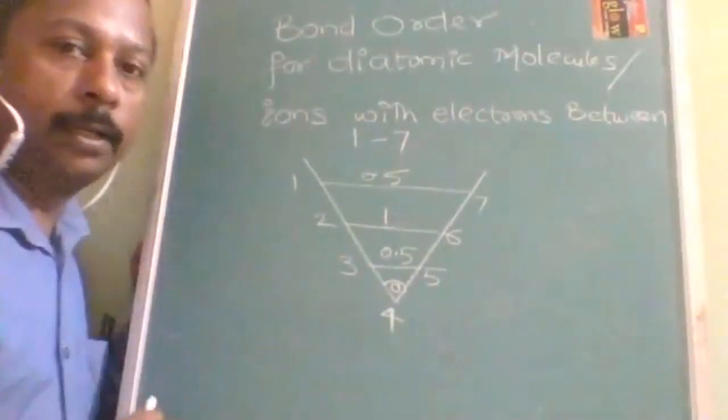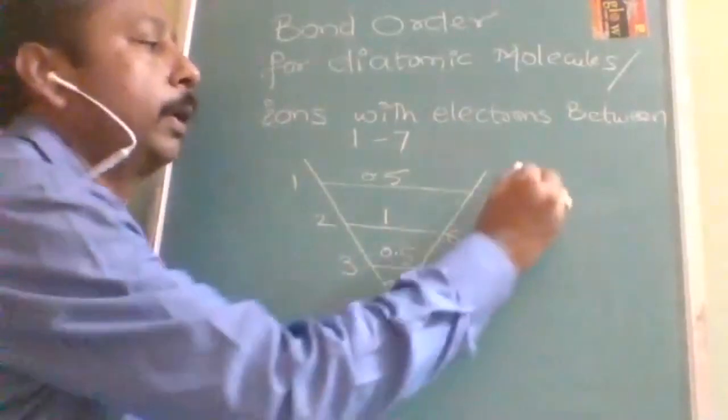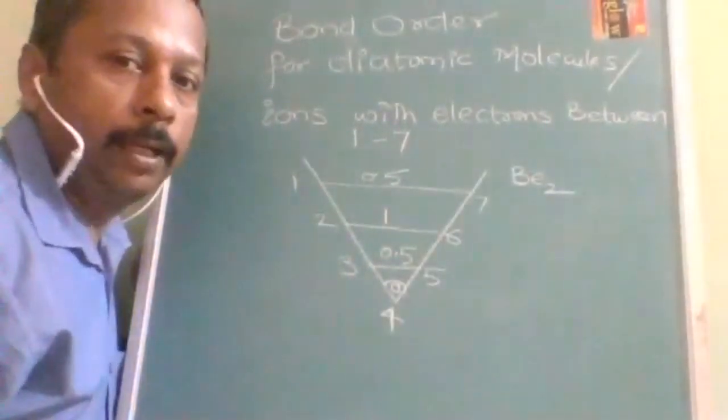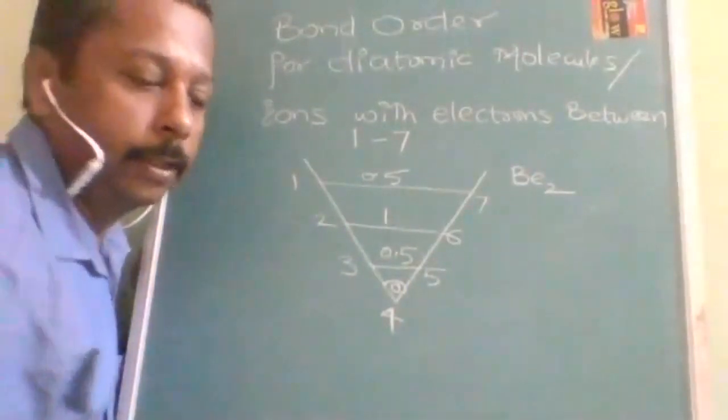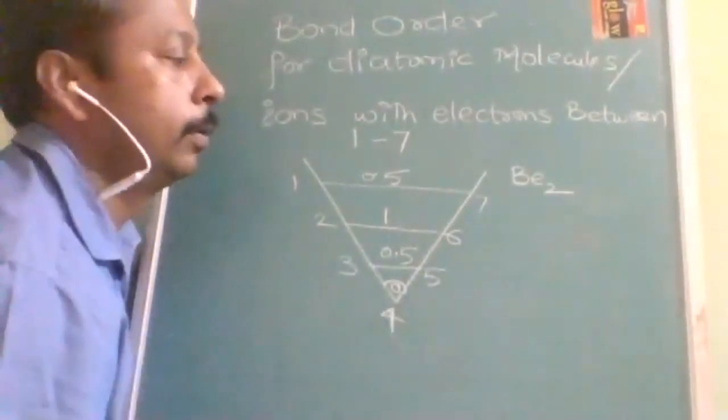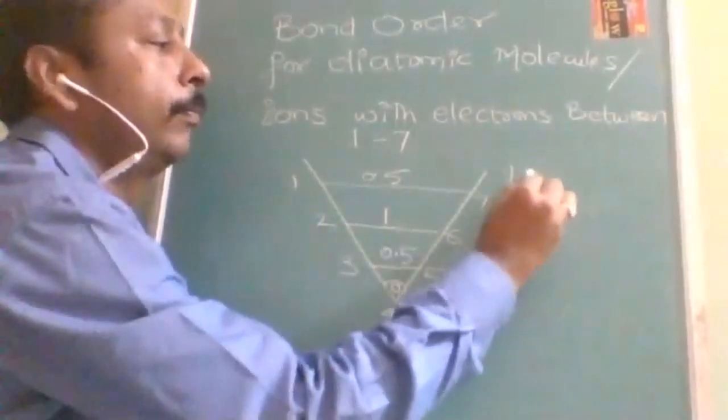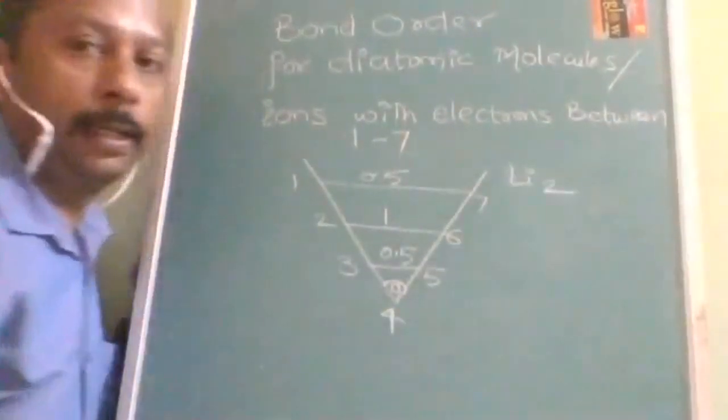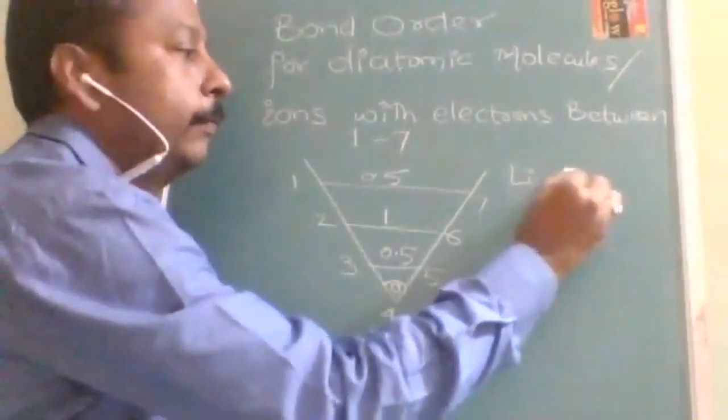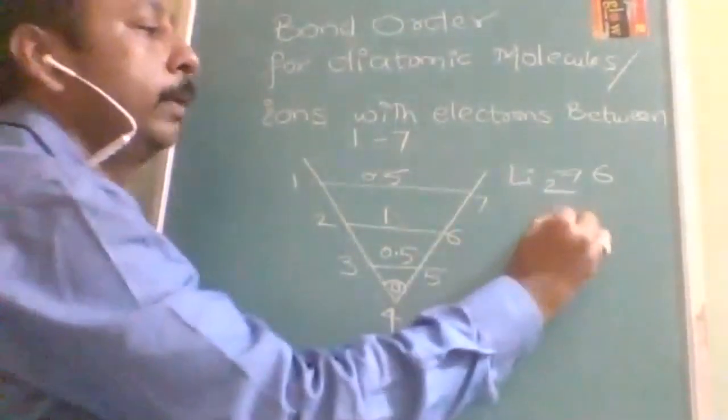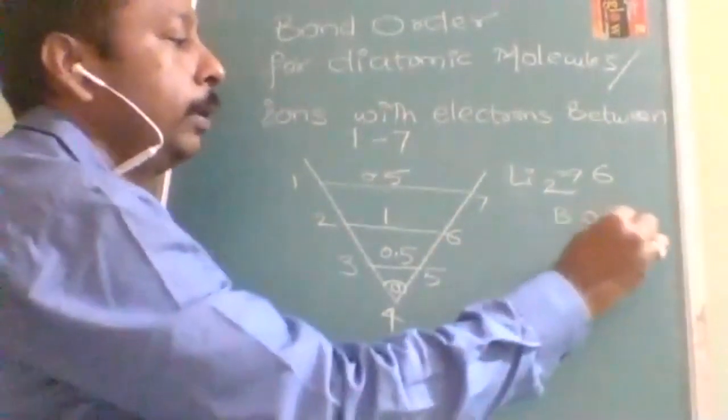I think you can utilize it for calculation. Let us take Be2. OK, beryllium. OK, so beryllium, beryllium is more than this one. Let us take lithium. Let us take lithium 2. OK, so for the lithium 2 it will be 6 electrons. So 6 electrons means bond order is going to be how much? 1.